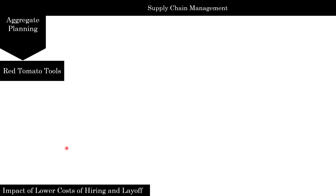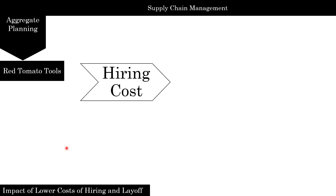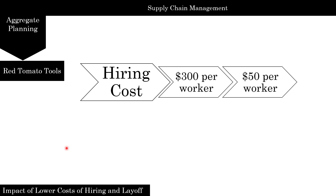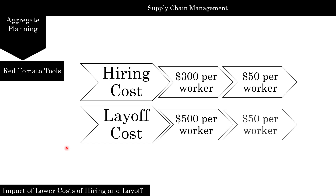Questions would come like: what if this scenario happened? How would it affect your solution? So let's look at the first what-if scenario. Our original hiring costs were $300, but now we're looking at lower hiring costs and lower layoff costs. So we go from $300 per worker to about $50 per worker, and we're going to remodel this problem in Excel.